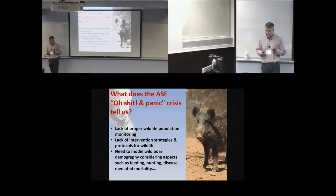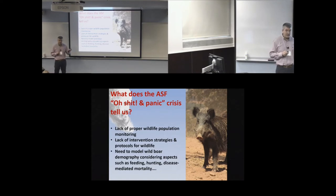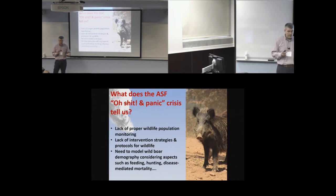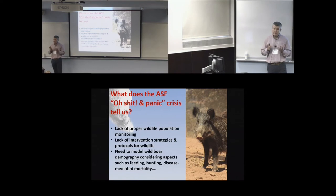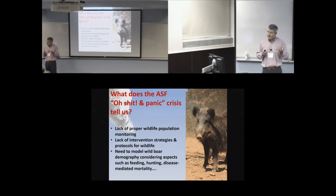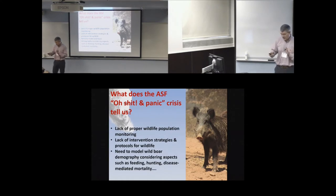Regarding modeling, we really need to model wild boar demography considering aspects such as feeding, hunting, and disease-mediated mortality. I think we have some basic information — like mortality rates, reproductive rates, and information on the possible effects of feeding on reproduction or survival. It would be really interesting to get a model that shows the stakeholders clearly what the effect of artificially feeding wild boar — for hunting purposes — is on the likelihood of those wild boar populations to maintain diseases such as African swine fever.